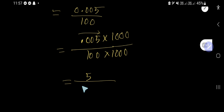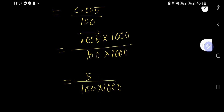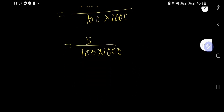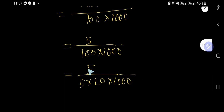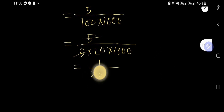Now reduce 5 over 100,000. Rewrite 100 as 5 times 20, so we have 5 over 20 times 1000. Cancel the factor of 5, giving us 1 over 20,000.